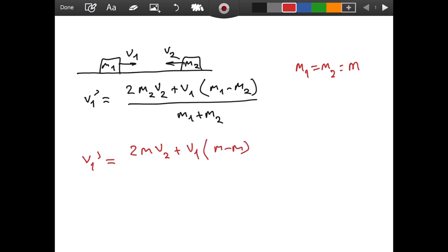So what do we get for v1 prime? For v1 prime we will get 2m v2 plus v1 divided by m minus m, and again divided by m plus m. So this is 2m and of course this one, m minus m, that is going to go to zero.